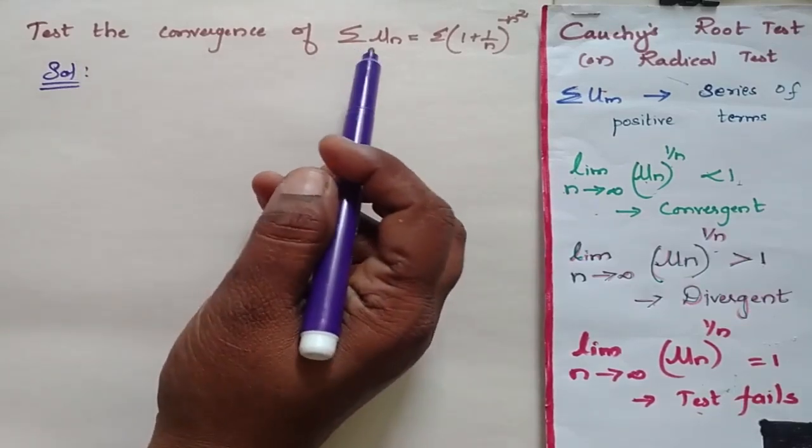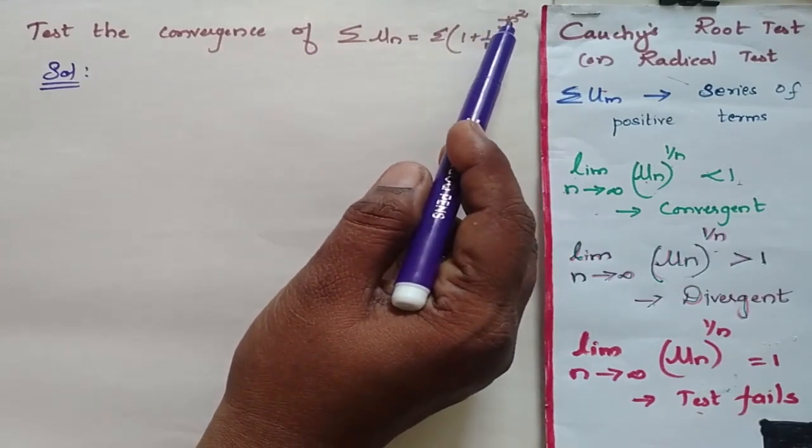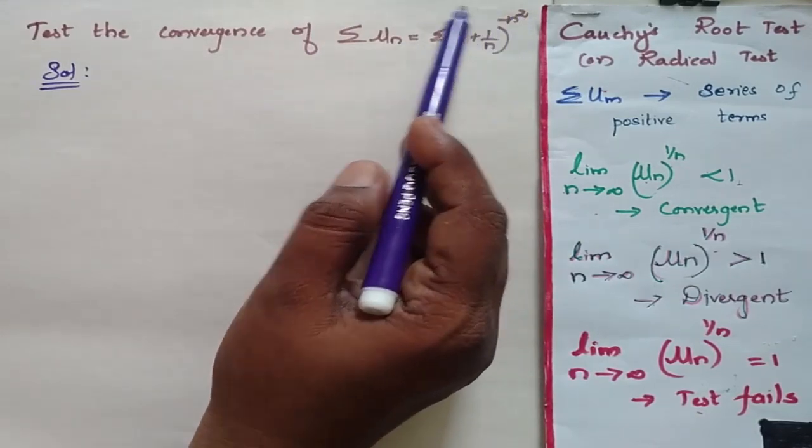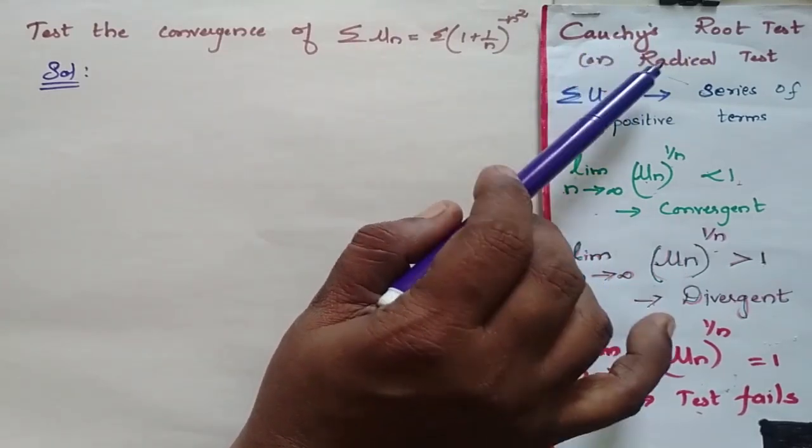Test the convergence of summation un is equal to summation 1 plus 1 by n to the power minus n square. We are going to test the convergence by Cauchy root test or radical test.